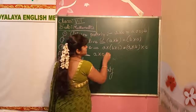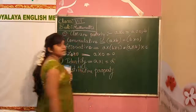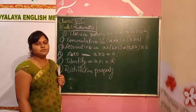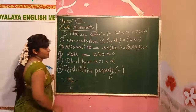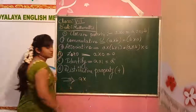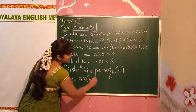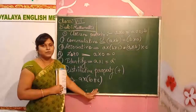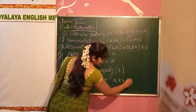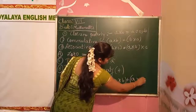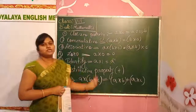Regarding multiplication by 0: when we multiply any integer with 0, we get 0 itself. For the identity property: when we multiply 1 with any integer, we get that integer itself. For the distributive property, we take the help of addition. When we have 3 integers A, B, and C, A into (B plus C) can be written as A into B plus A into C. This helps us calculate sums in an easier way. These are the properties of multiplication.